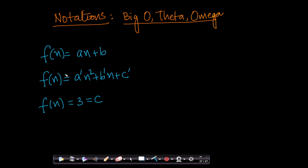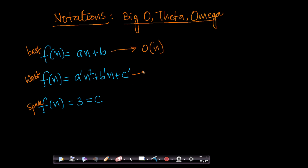In the previous video, we saw the best time complexity, the worst time complexity, and the space complexity. Writing each as f of n, we saw that one is order of n, another is order of n square, and the third is order of 1. We gave some intuitive understanding stating that a and b are constants, and b is multiplied by 1.